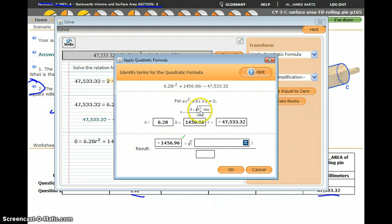Under the square root, I have b squared minus 4ac, and so b was 1456.96, and I need to square that, minus 4 times a, and in this case a right here is 6.28, times c.